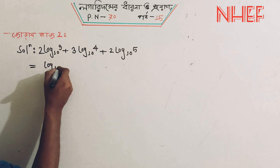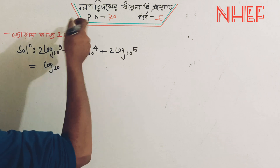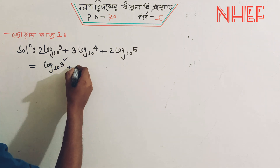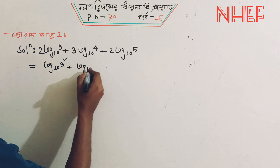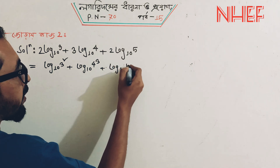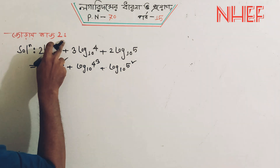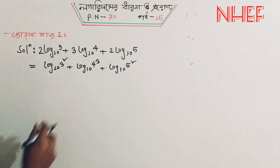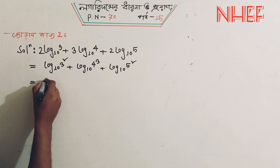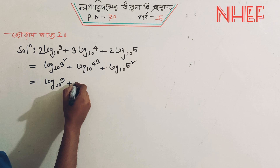Log 10 base. The numbers are expressed as log 10 base 3 squared, plus log 10 base 2 cubed, plus log 10 base 5 squared. Using the power rule, this becomes log 10 base 9 plus log 10 base 8 plus log 10 base 25.